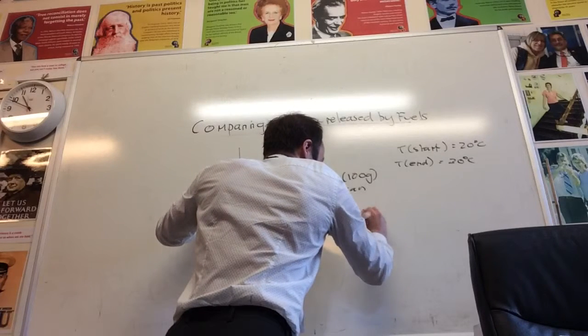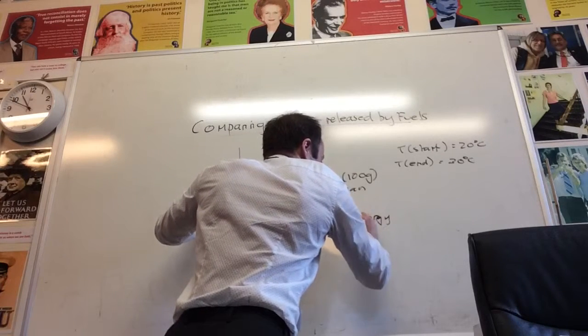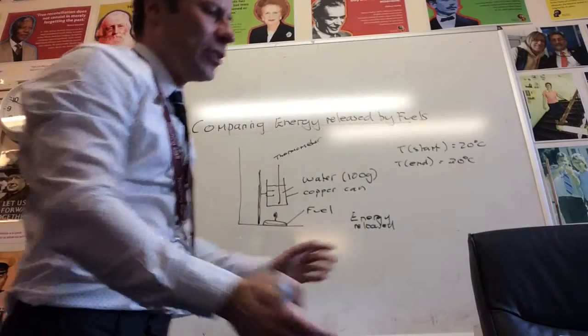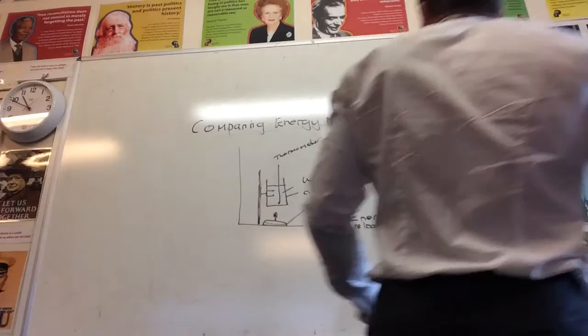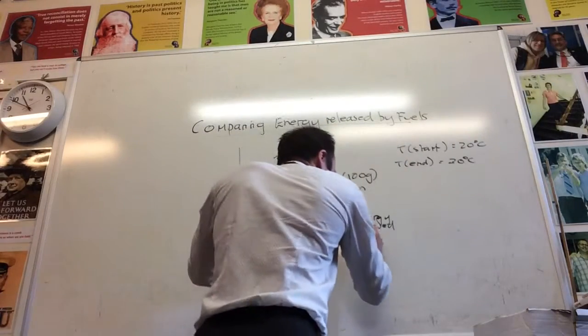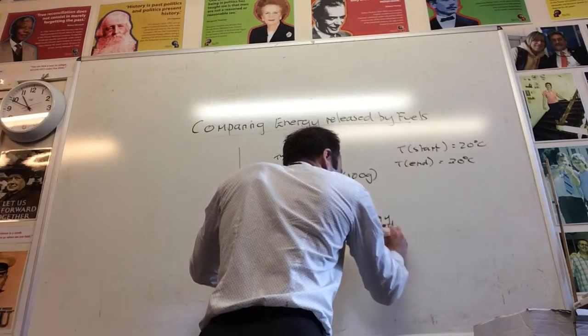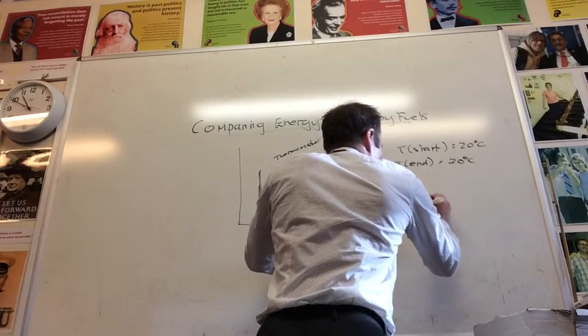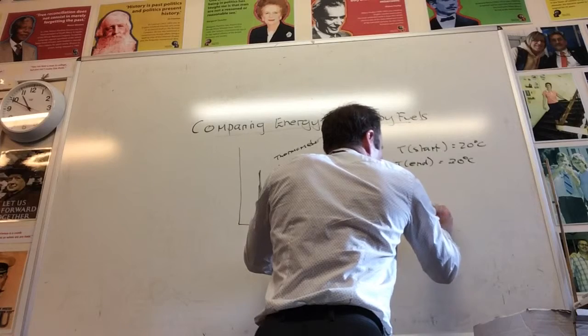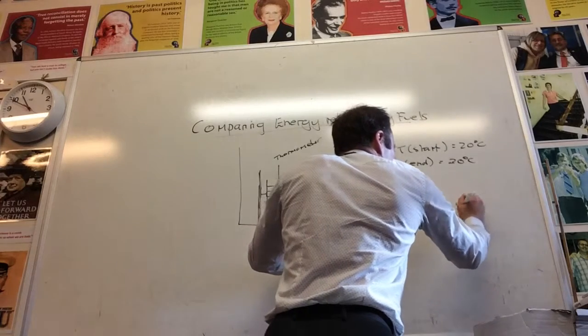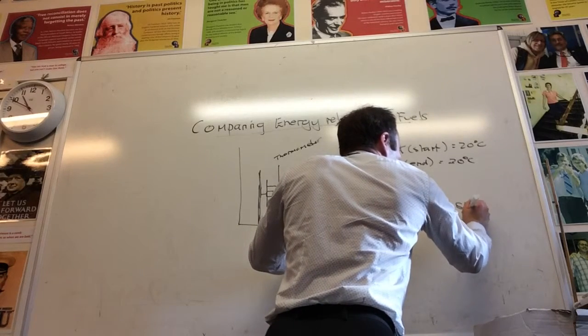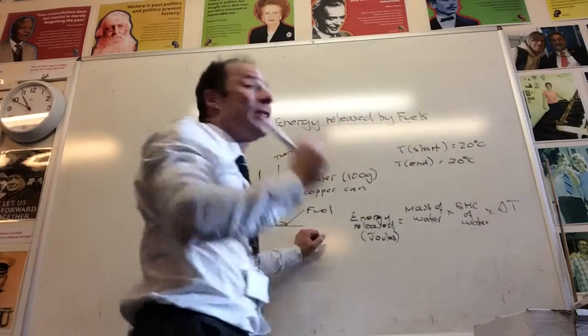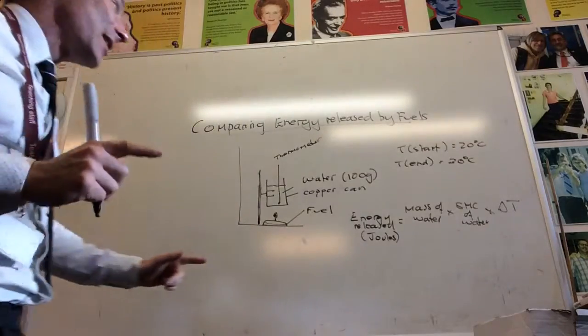I can say energy released—and what do we measure energy in? Energy is measured in? Yeah, in this one it actually comes out in joules and we're going to convert it into joules. It's the mass of water times the specific heat capacity of water times delta T. So that's your temperature change.